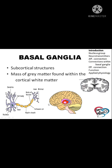Many cell bodies are present in the basal ganglia. So it carries the information from the basal ganglia to other parts of the brain. The gray matter of the basal ganglia is due to the cell body.